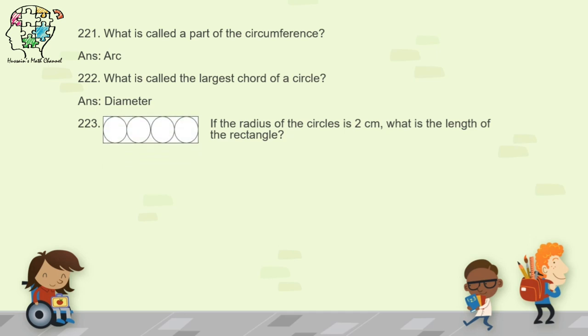Question 223: if the radius of one circle is 2 centimeters, what is the length of the rectangle containing 4 circles? The radius is 2 centimeters so the diameter is 4 centimeters. There are 4 circles, so 4 diameters equal 16 centimeters. The length of the rectangle is 16 centimeters.